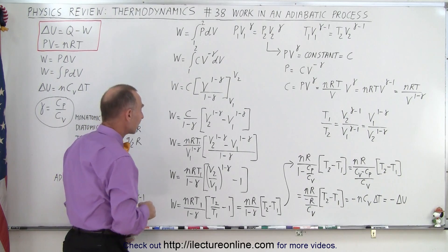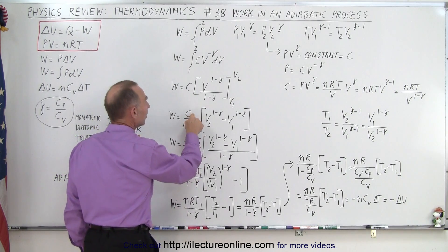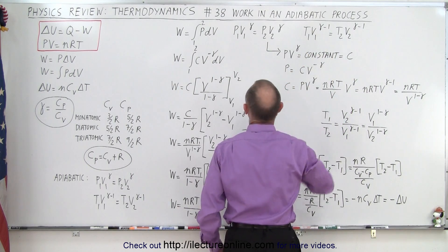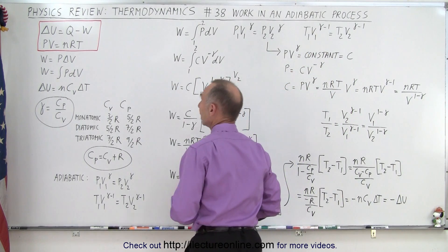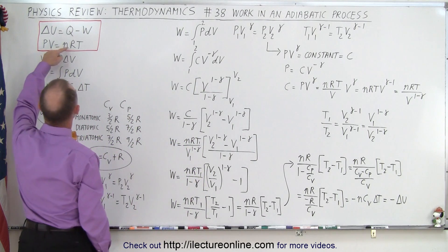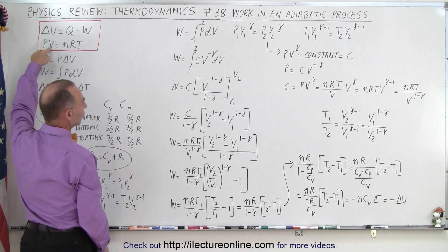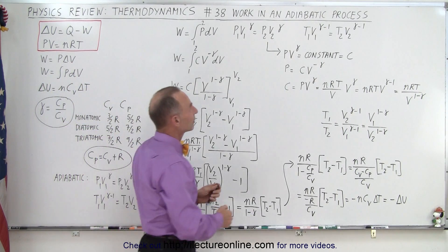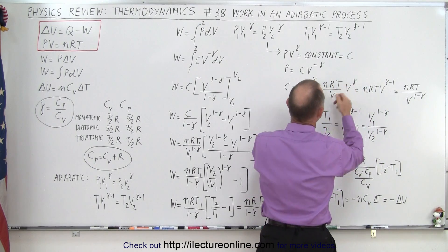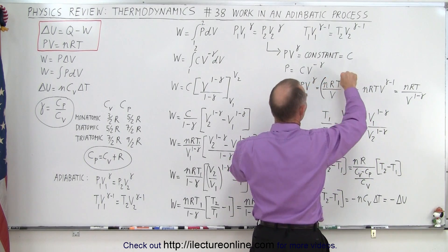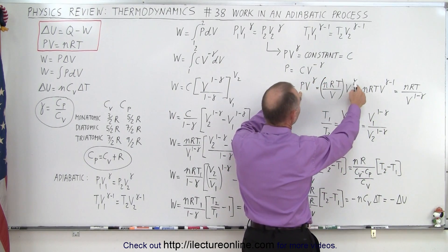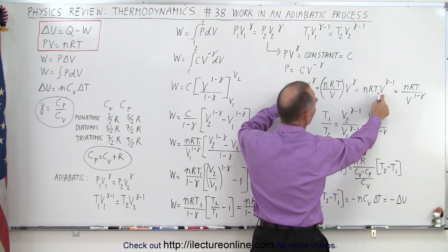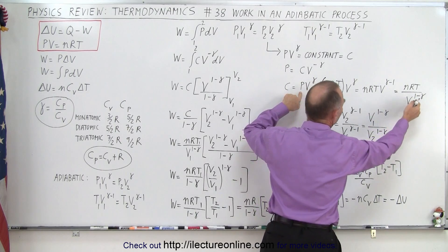So then we realize that if we now replace the C, the constant, by PV to the gamma, but then realizing that P can be written as such, P is equal to nRT over V from the ideal gas equation. So instead of writing C, we can write nRT over V, so this is the P, this is the same as the P right here, the pressure times V to the gamma, and then of course these two then simplify to gamma minus 1 as the exponent, or in the denominators, 1 minus gamma.